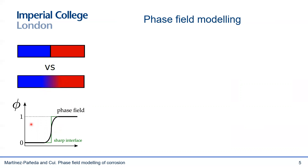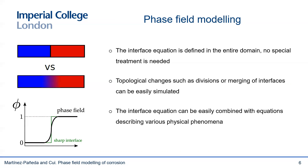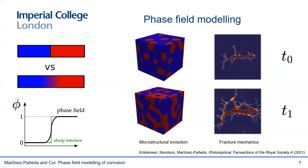In this example, we have two phases, and the phase field variable takes a distinct value in each of the phases — zero or one — and varies smoothly between. We know that this is very powerful and offers multiple advantages relative to the treatment of a discontinuous interface. One of them is that the interface equation is defined in the entire domain, so there's no need for special treatment of the interface. Another benefit is that topological changes such as divisions or merging of interfaces can be easily simulated without ad hoc criteria. And a third benefit is that it is well suited for multiphysics problems. These advantages are key to tackle the long-standing challenge of modeling corrosion damage.